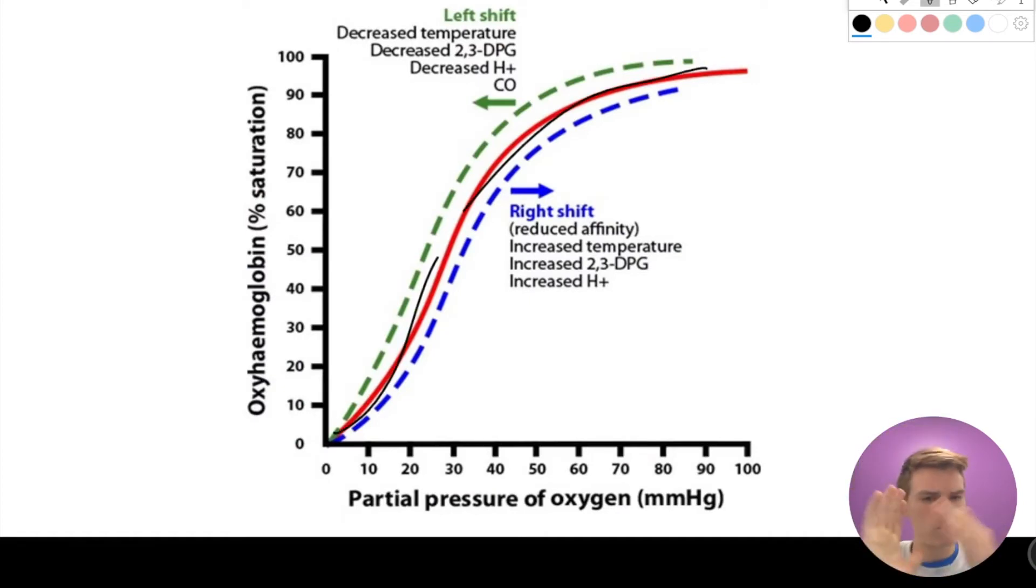And so what that leads to is this curved binding curve right here. So normally we'd expect if we have four sites that aren't interacting at all, that it would just increase at a linear rate. But since it does this conformational change over to a relaxed state, we are going to expect that after one or two bind, it's going to go really fast and then it's going to plateau off a little bit. And what we call this is cooperative binding. And it makes it so that it's able to load more in the lungs and offload more in the tissues.